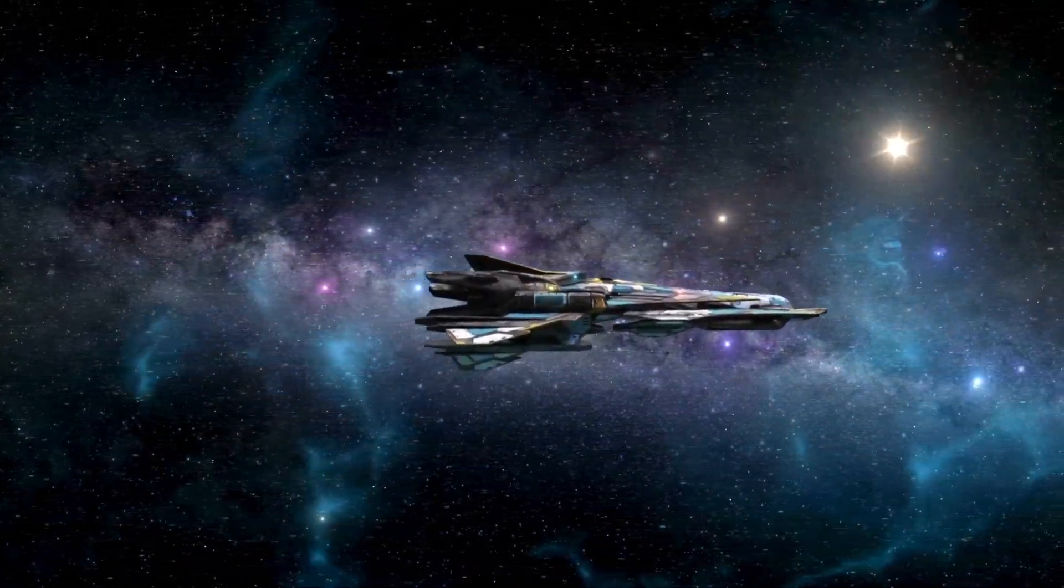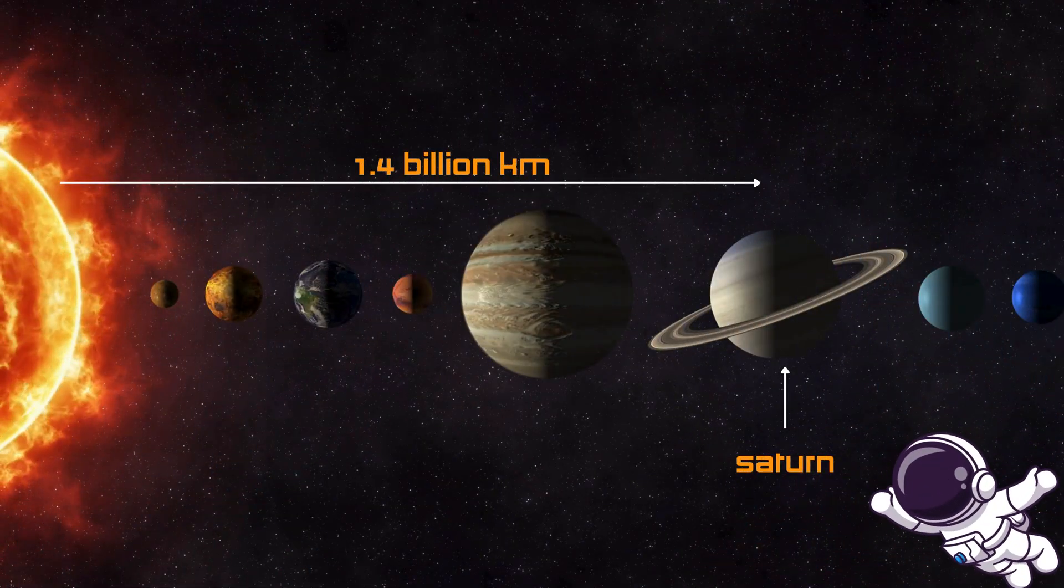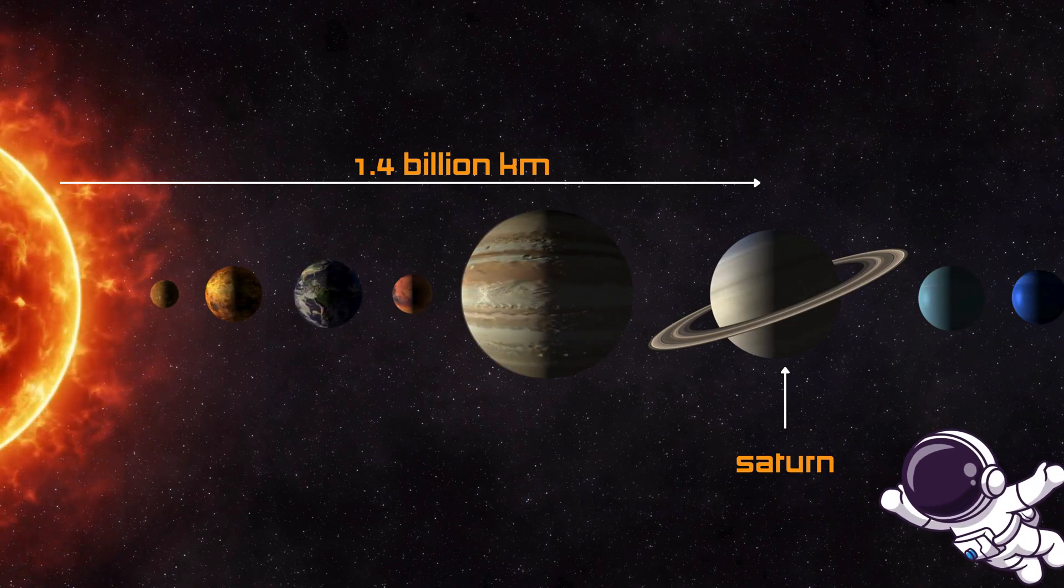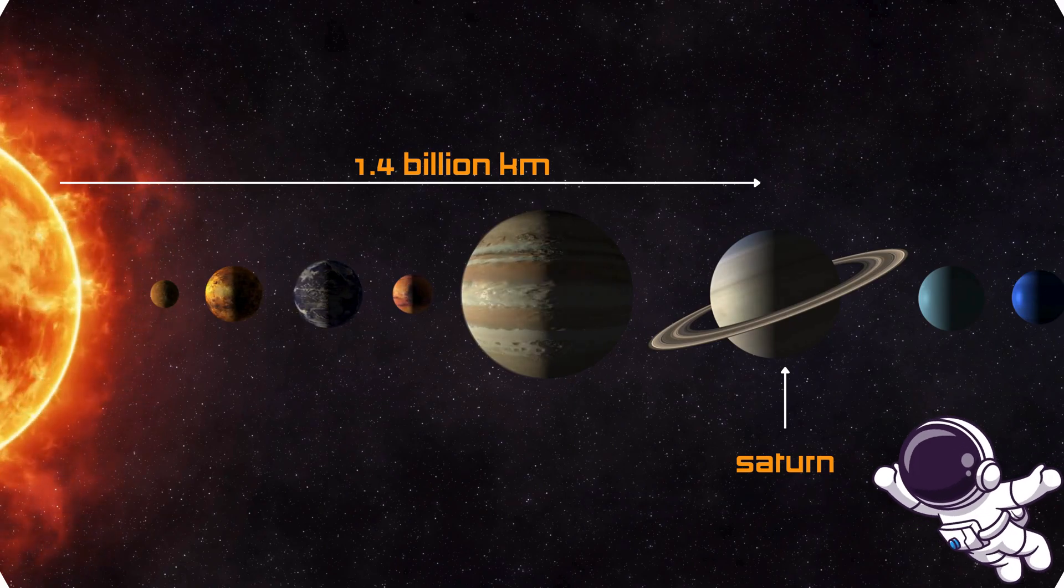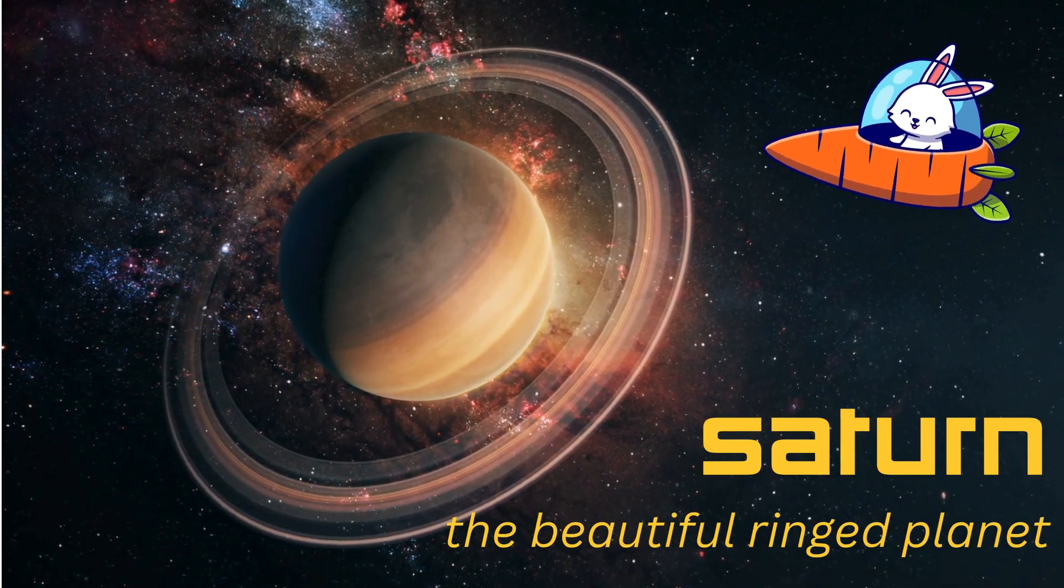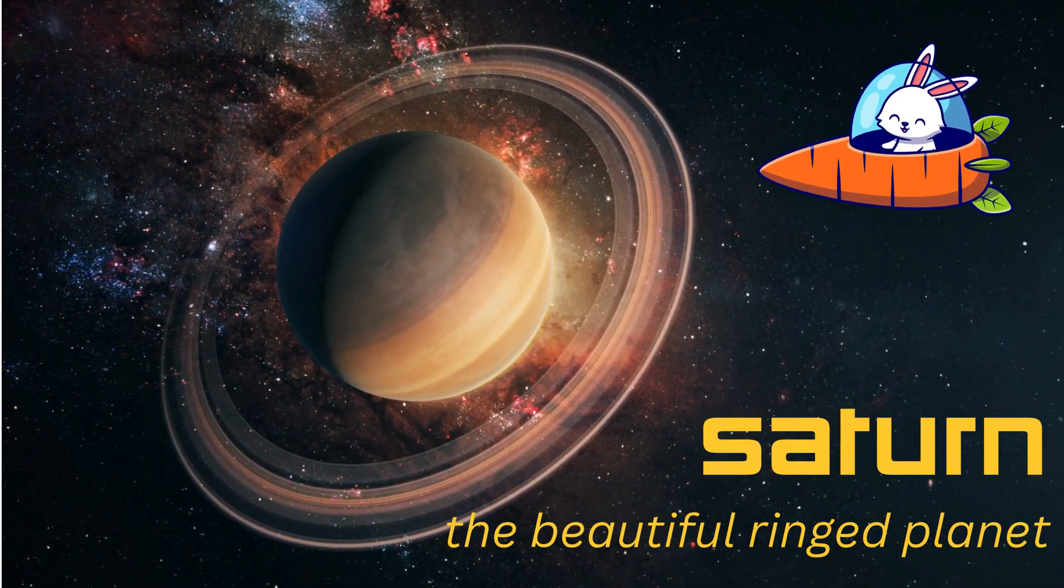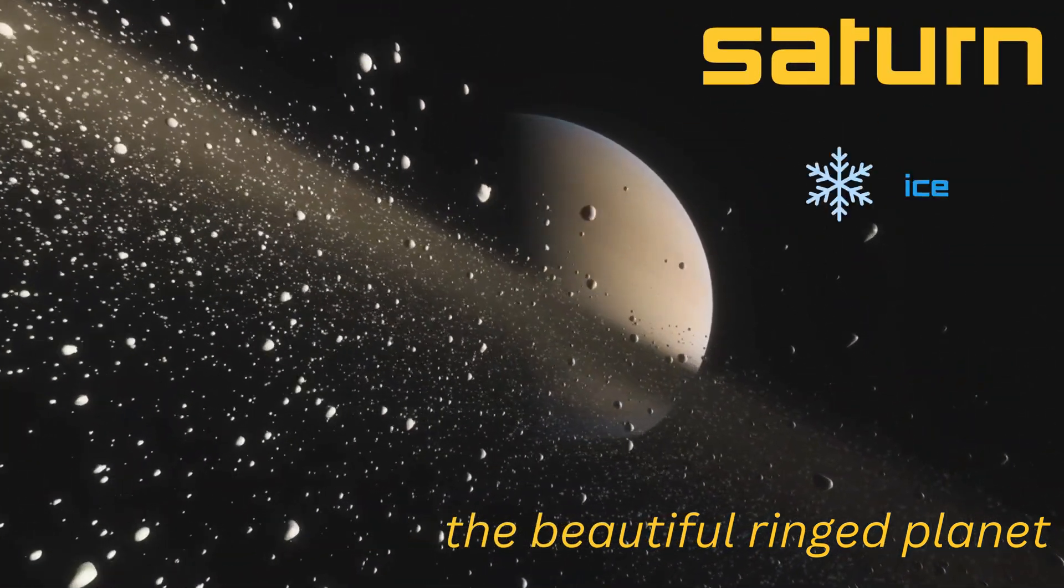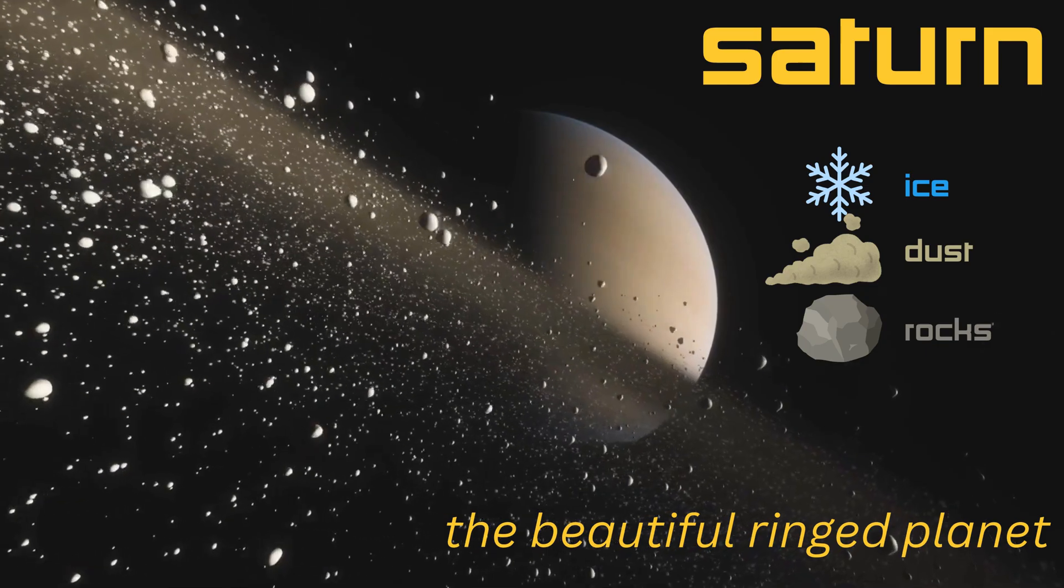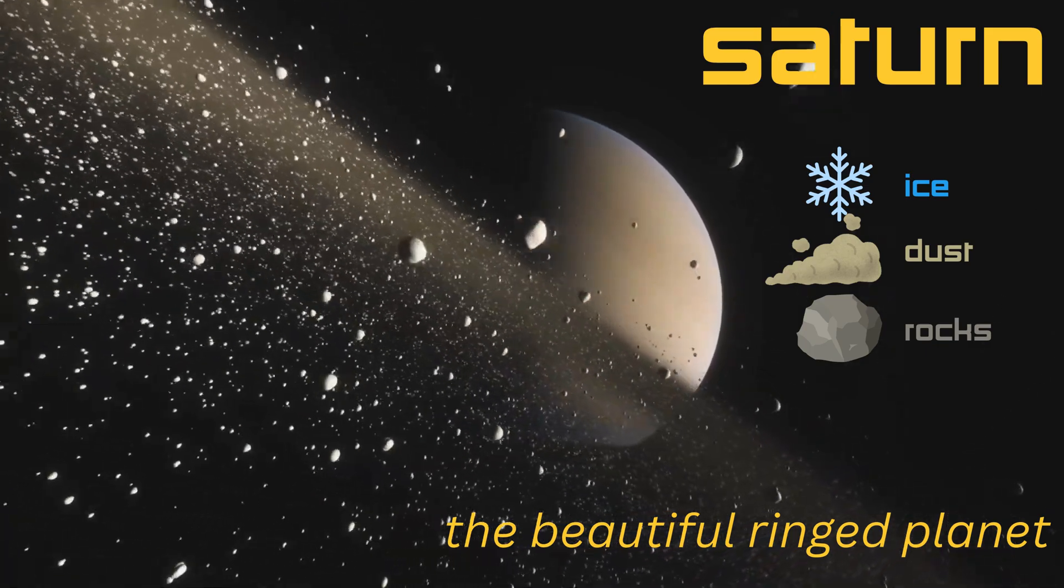Now we're flying to one of the most famous planets, Saturn. Saturn is about 886 million miles, 1.4 billion kilometers from the sun. What makes Saturn so special are its beautiful rings that circle the planet. The rings are made of ice, dust, and rocks, some as small as pebbles, and others as big as houses.